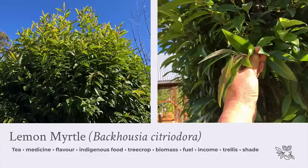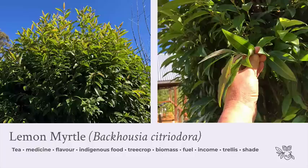Lemon myrtle is planted quite close to my veranda — I harvest from it pretty much every day, just taking the little leaves to make a cup of tea. One or two leaves in hot water makes a beautiful refreshing lemon-zingy tea. It's really nice blended with dried rosella leaves or ginger. Having your own tea garden is a wonderful thing — there are so many plants you can grow for tea.